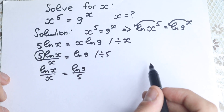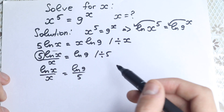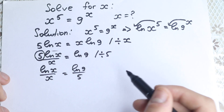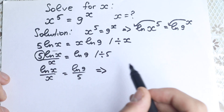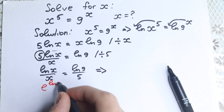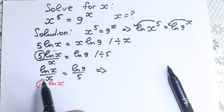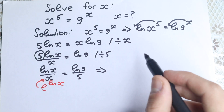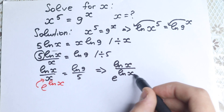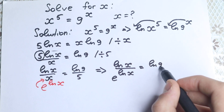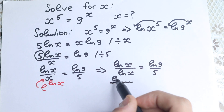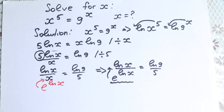From this expression we have this one. Now let's think about how we can solve it, because the best way is to apply the Lambert W function. Take a look at what I'm going to do: instead of x in the denominator, let's write e to the power ln(x). It is completely the same. So we have ln(x) divided by e^(ln x) equal to ln(9)/5. Now let's bring the denominator term to the numerator — we put a minus in the exponent.